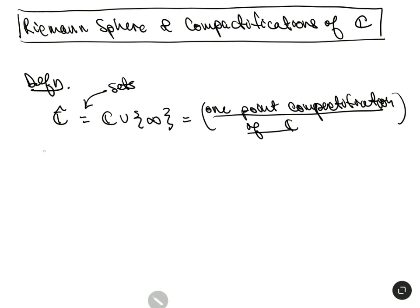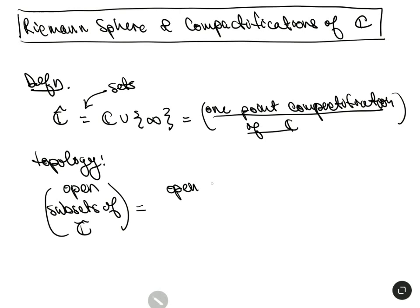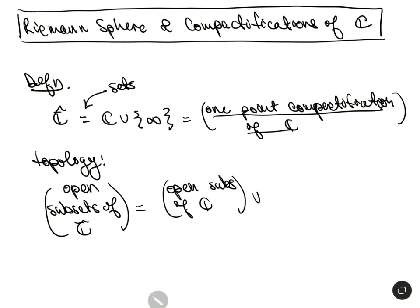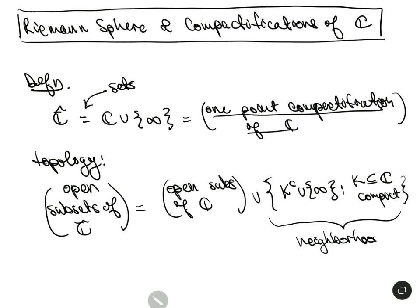As a set it's that, but as a topological space we need to say what the open sets are. The open subsets of ℂ-hat are: the usual open subsets of ℂ, union — now we have to specify what neighborhoods of infinity look like — the complements of compact subsets of ℂ. So closed and bounded subsets: we take the complement, and these will be neighborhoods of infinity. By definition, those are the open subsets of infinity in this new topology.